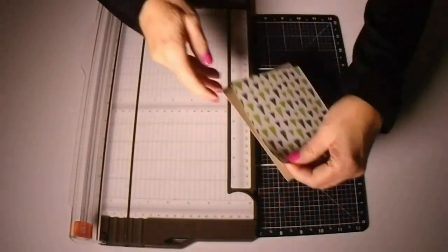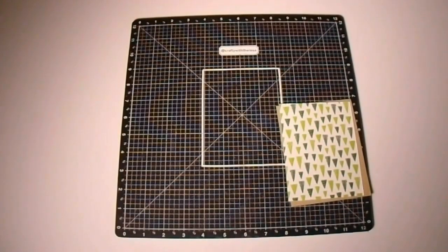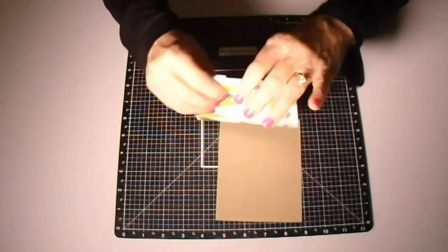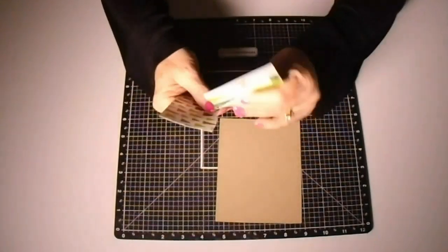Next we'll cut up a piece of crumb cake cardstock to four and a quarter by five and a half. We'll end up doing some tearing with that as well.